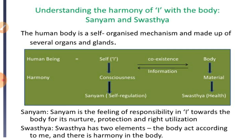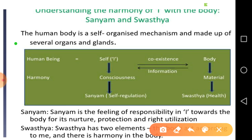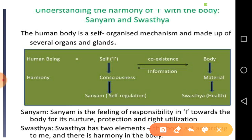The human body is a self-organized mechanism — किसी दूसरे के द्वारा मैं जीवन नहीं जीता, मैं जीवन मेरे सिद्धांतों या मेरी आदतों के अनुसार जीता हूँ — and made up of several organs and glands. मेरे शरीर के अंदर विभिन्न प्रकार की ग्रंथियाँ और अंगों में गतिशीलता होती है। मैं जो हूँ वो consciousness है — चेतना — और मेरा शरीर भौतिकवादी, रासायनिक अवयवों से बना है। मेरे अंदर चेतना होती है और यह स्वयम होता है — self-regulation.